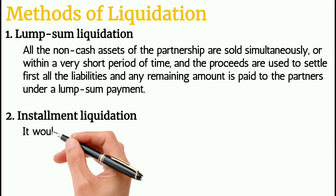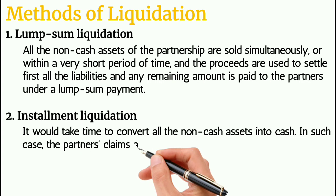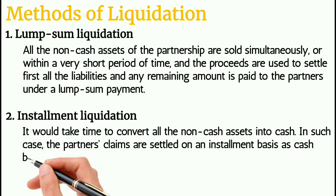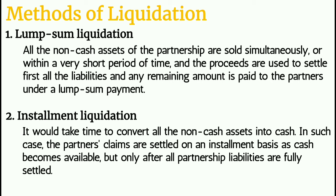On the other hand, in installment liquidation, it would take time to convert all the non-cash assets into cash. In such a case, the partners' claims are settled on an installment basis as cash becomes available, but only after all partnership liabilities are fully settled. In installment liquidation, only some of the non-cash assets are converted into cash at a time — unlike lump sum liquidation where all non-cash assets are converted simultaneously, and the settlement of partners' claims is only partial.